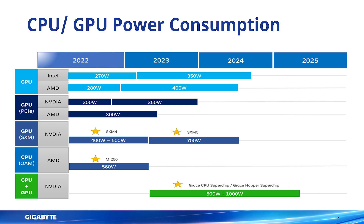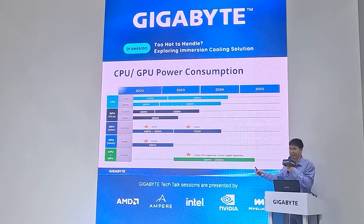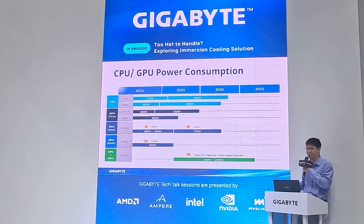Looking at this GPU and CPU power consumption table, for last-generation CPUs — Intel Whitley and AMD Milan — the TDP was 270 to 280 watts. This generation, Genoa and Sapphire Rapids, has reached 350 to 400 watts. For GPUs, the H100 was 400–500 watts in 2022, and the H200 is 700 watts in 2023. We can see a clear escalation of power consumption year by year.